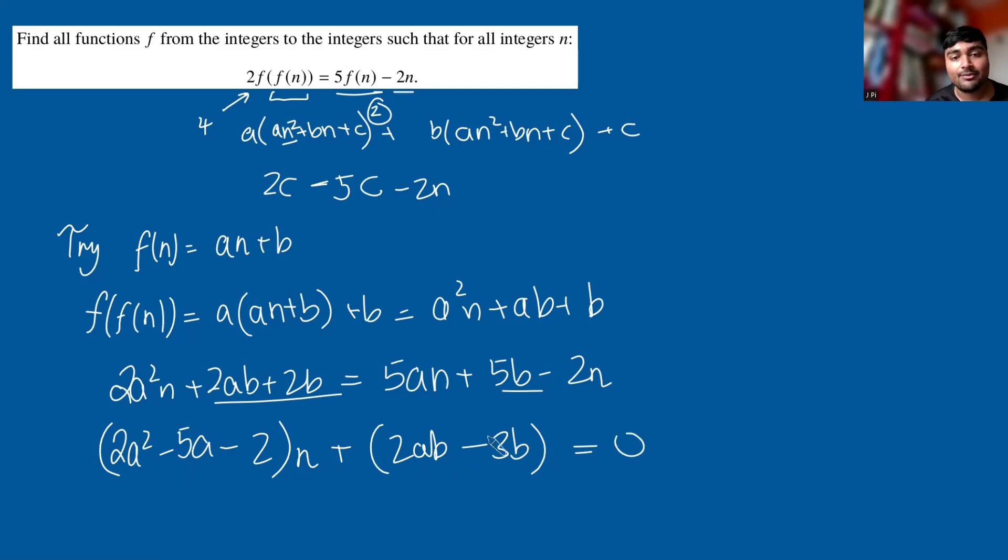This has to be true for every single value of n. And this thing here is just a linear equation in n. It can be written in the form λn + μ, if we just call that λ and that μ. And we're saying that this has to be zero for every single possible value of n. So that makes it hopefully pretty clear that λ and μ must be zero.